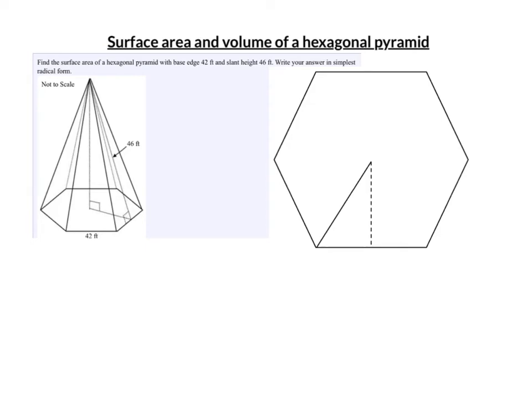Surface area and volume of a hexagonal pyramid. So this first one is surface area. The base is a hexagon, that's why we call it a hexagonal pyramid, and they give us the slant height.